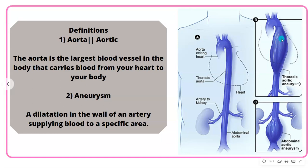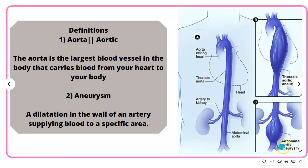An aneurysm can occur at the level of the chest, in the chest region. Any aneurysm happening in the chest region is called a thoracic aortic aneurysm. If it happens in the abdominal region, then it is called an abdominal aortic aneurysm.